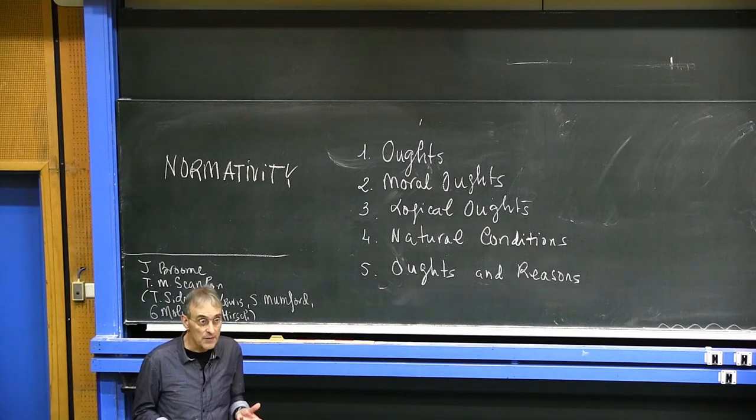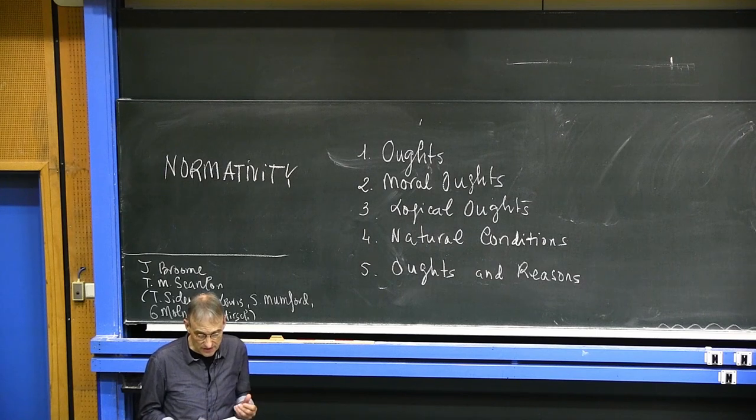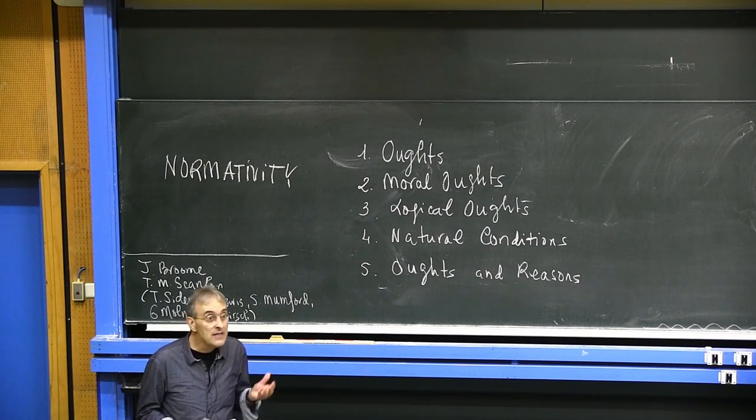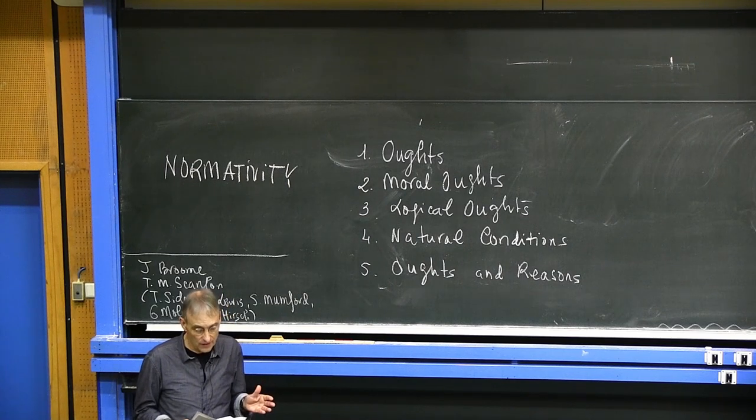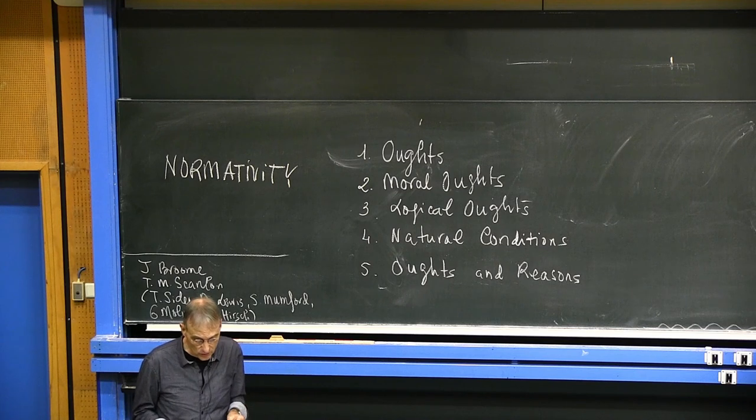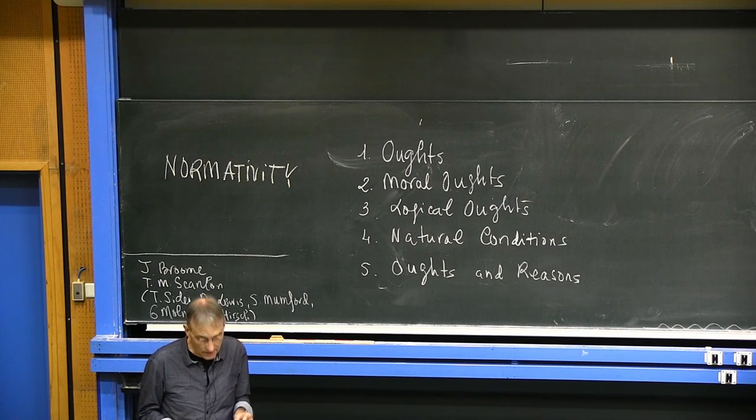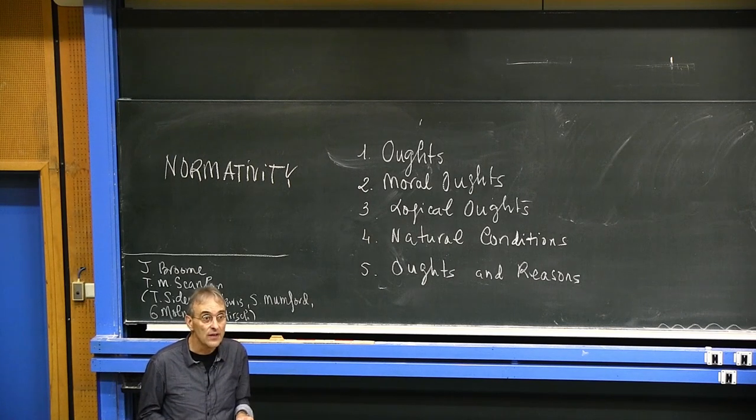In this world, in the empirical world physics tries to understand and to explain, there are indeed variations and covariations that manifest natural oughts and conditions for all those who want to understand and explain it, for all those who want to understand and explain what there is and what happens.